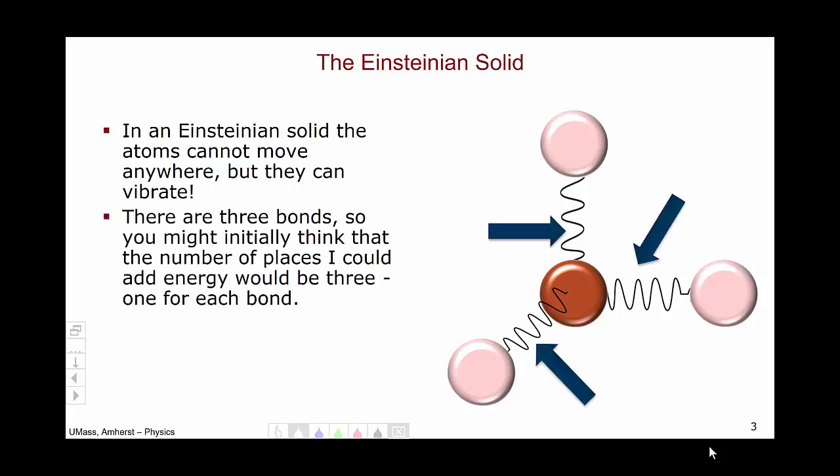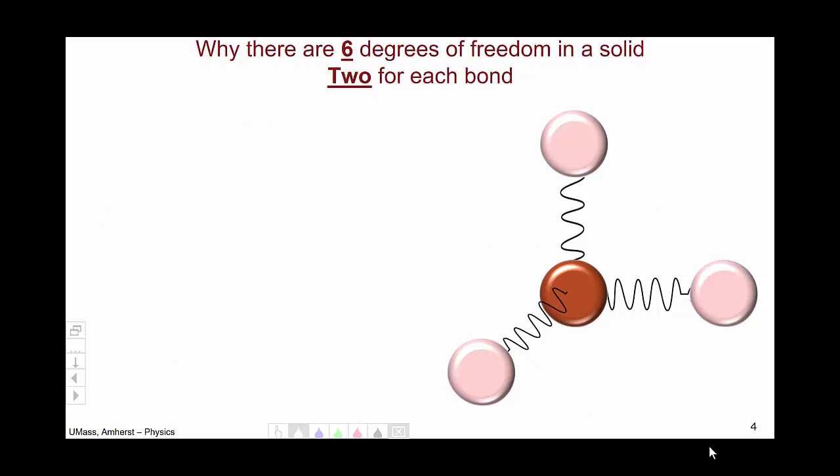You might think there are three bonds, so there are three places I can put energy. I could put it in any of the three bonds. And this is a very reasonable assumption, but not quite right. In fact, there are six degrees of freedom in a solid. There are two for each bond, not just one.